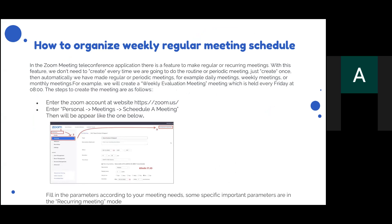With this feature, we don't need to create a new meeting every time we want to do a routine or periodic meeting. Just create it once, and automatically we have a regular or periodic meeting — for example, a daily meeting, weekly meeting, or monthly meeting.